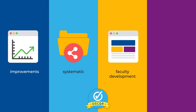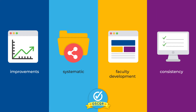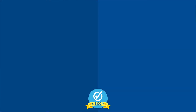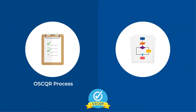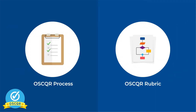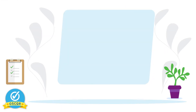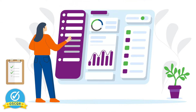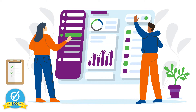This data can be used to inform faculty development and support large-scale online course design, review, and refresh efforts consistently. There are two components: the OSCQR process and the OSCQR rubric. The OSCQR process provides a framework and a dashboard to support a campus-tailored and scalable approach to improving the instructional design and accessibility of online or blended courses.